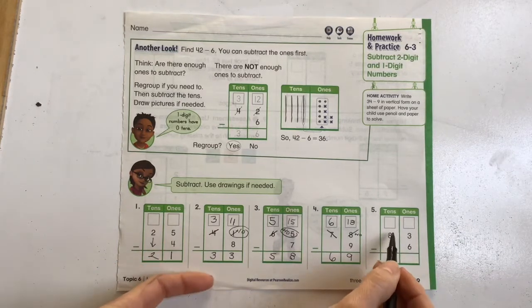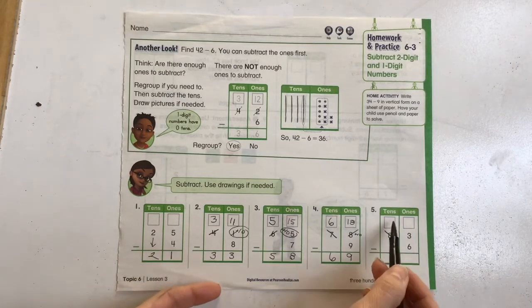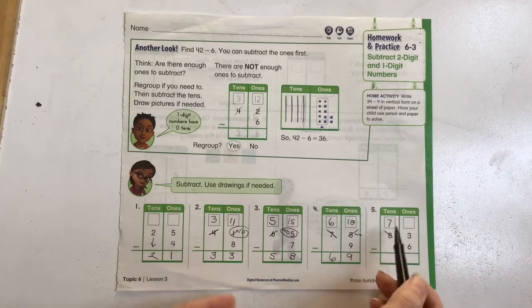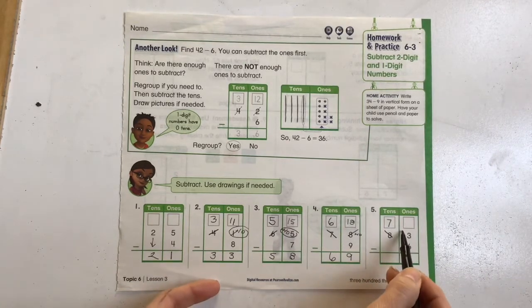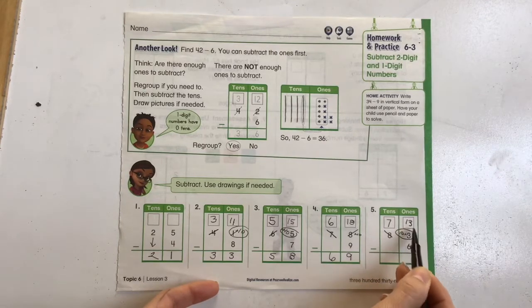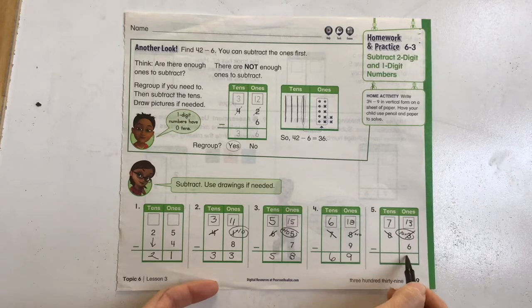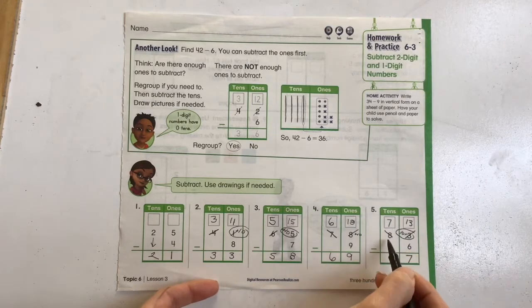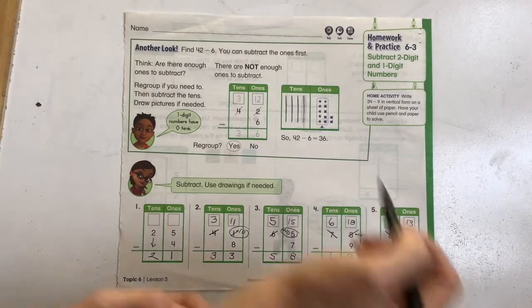We've got 8 groups of 10. We need to subtract 1 group of 10. Subtracting 1 group of 10 over here becomes 7. We're going to regroup that group of 10 over here, so it's going to become 10 plus 3 is 13. 13 minus 6 is 7. 7 minus nothing goes straight down to 77.